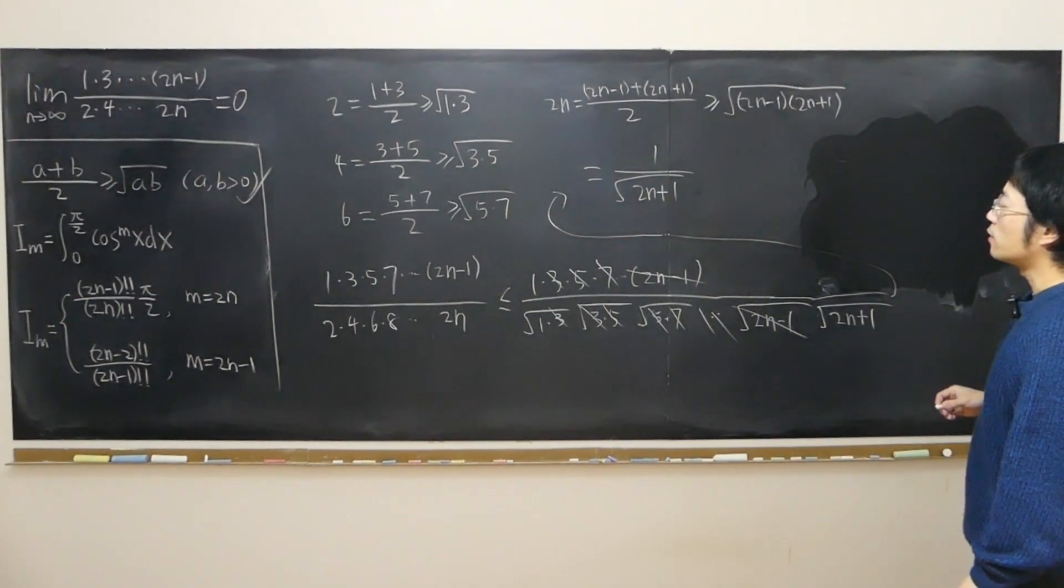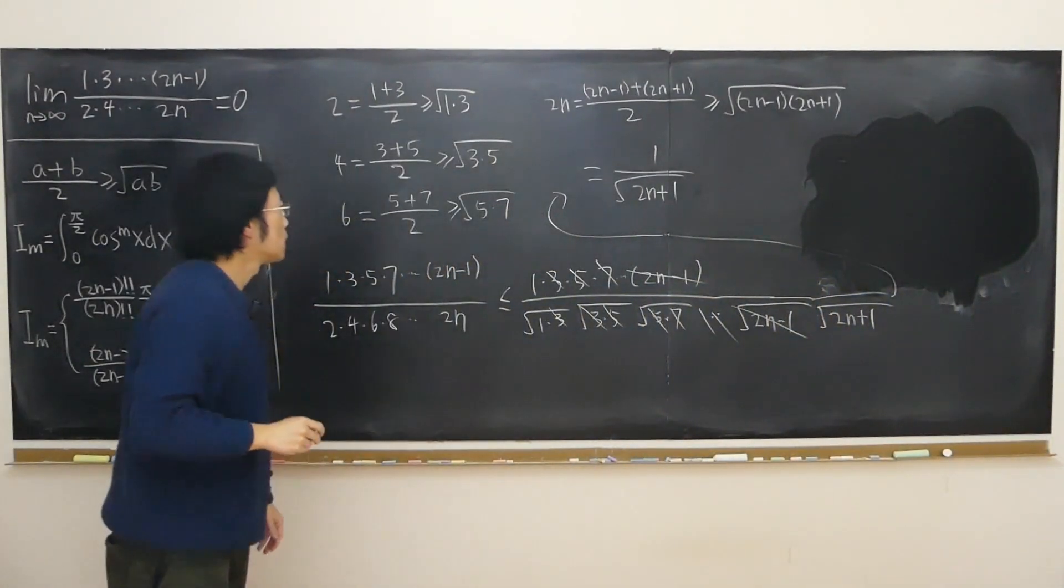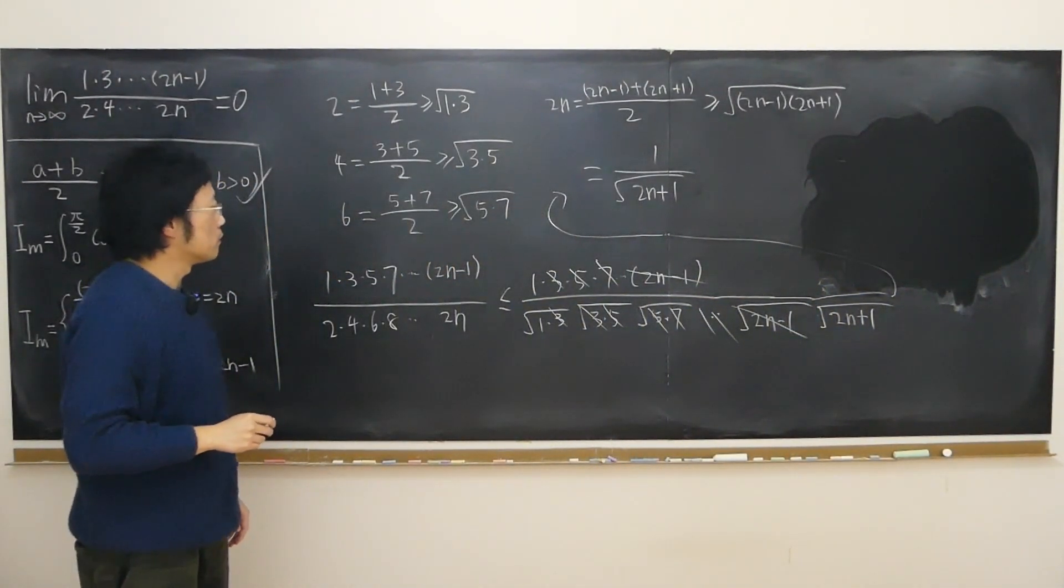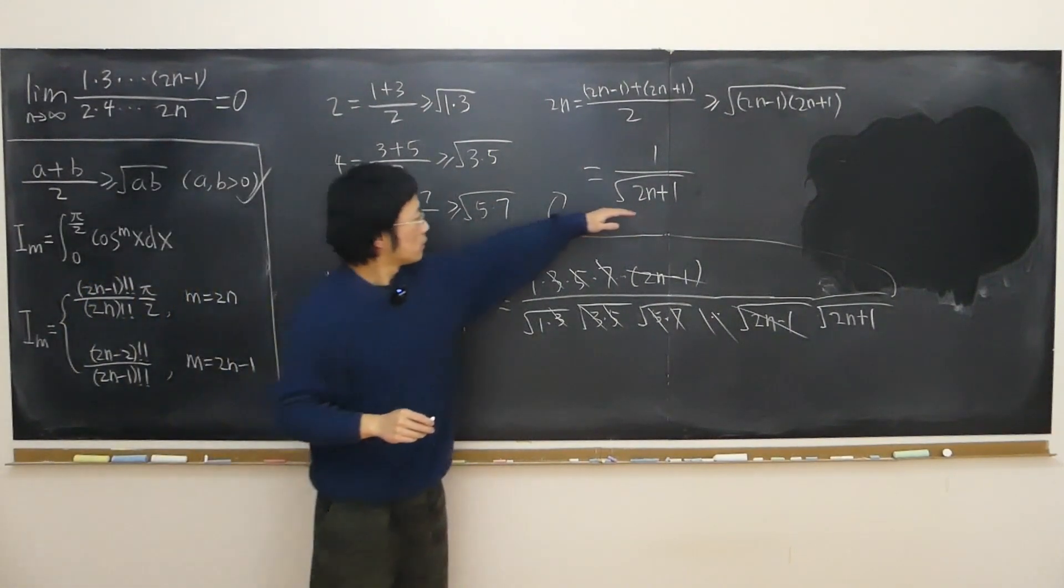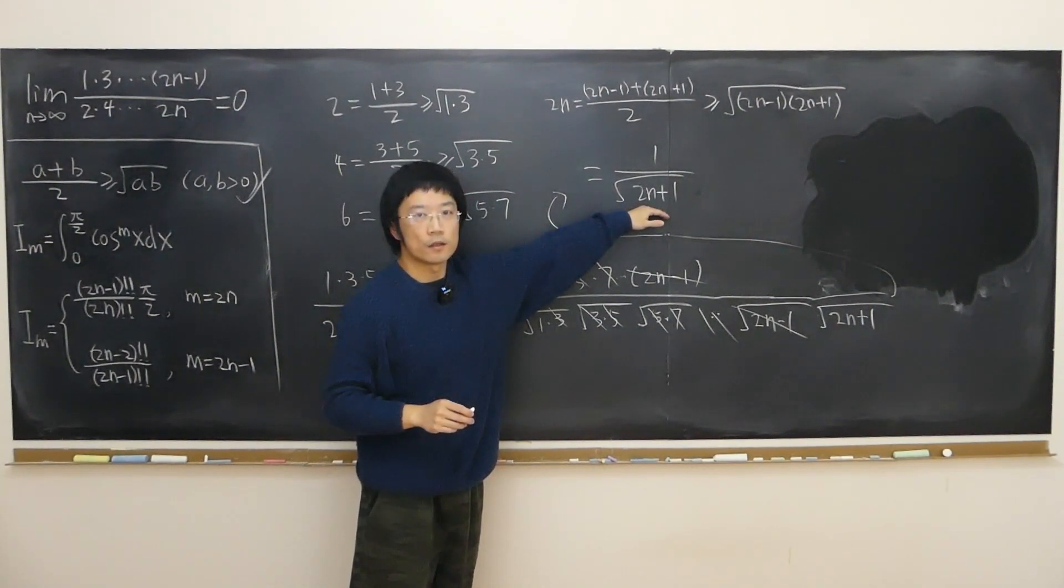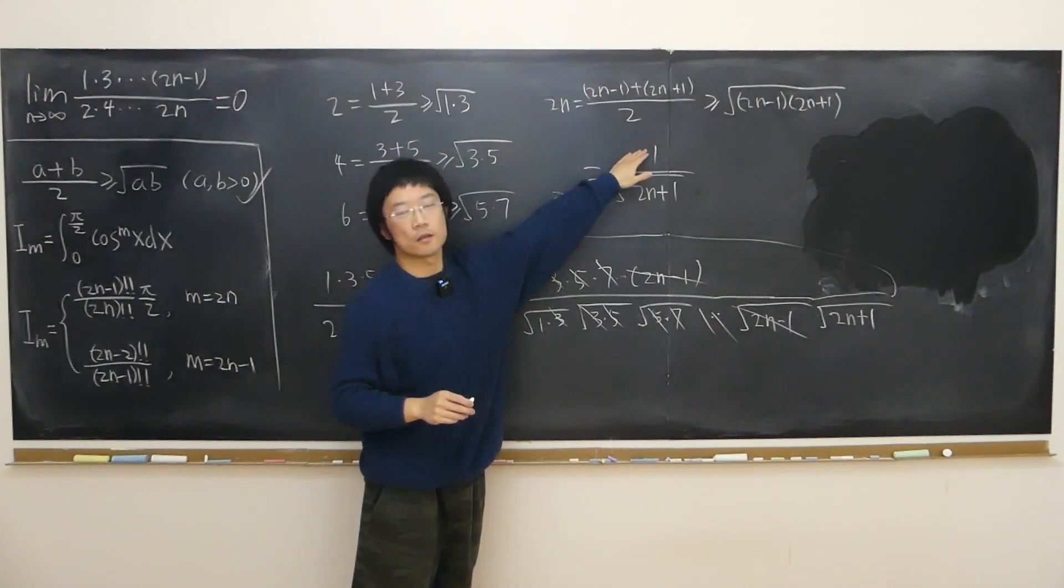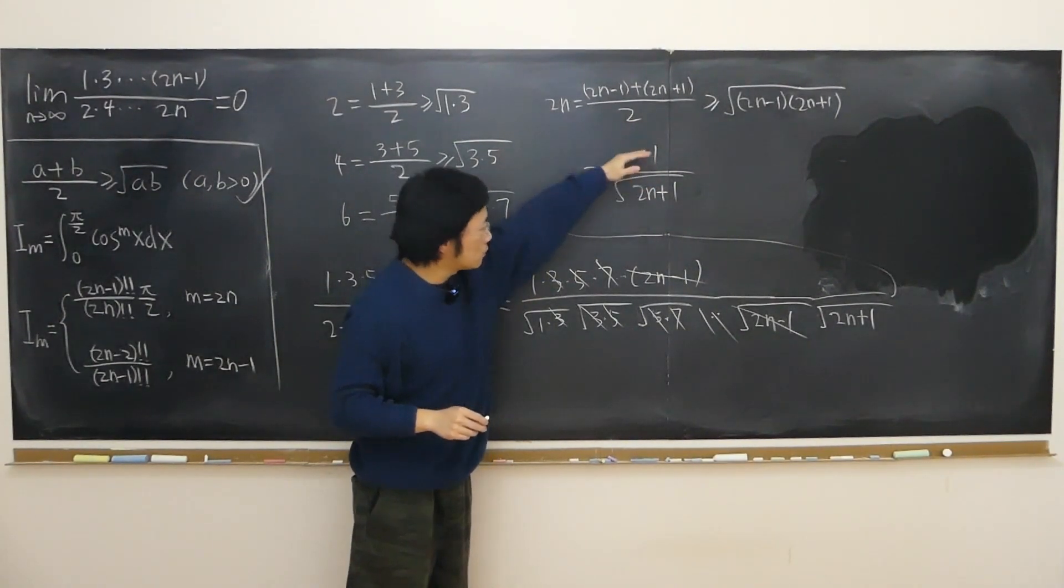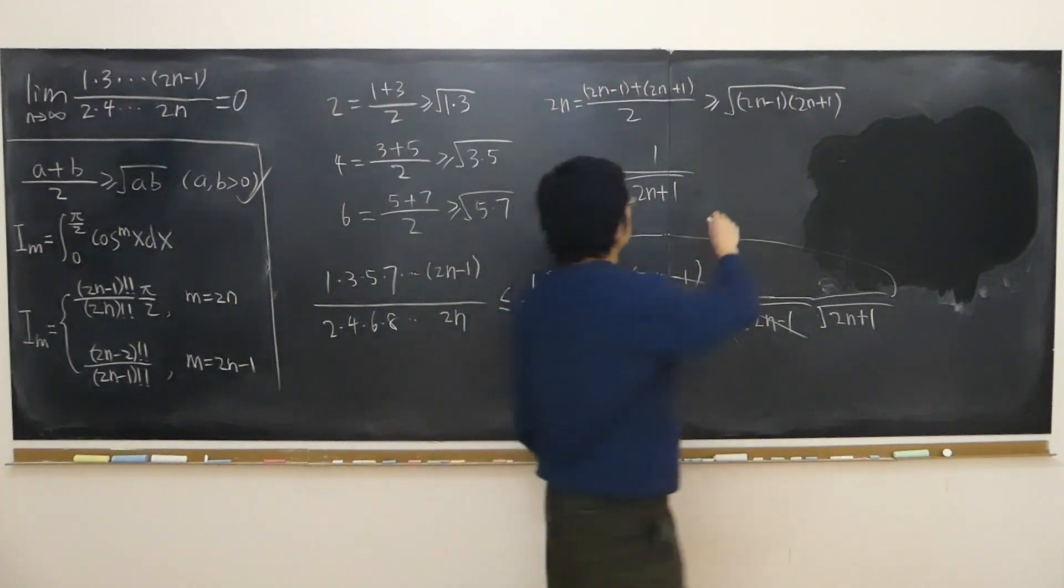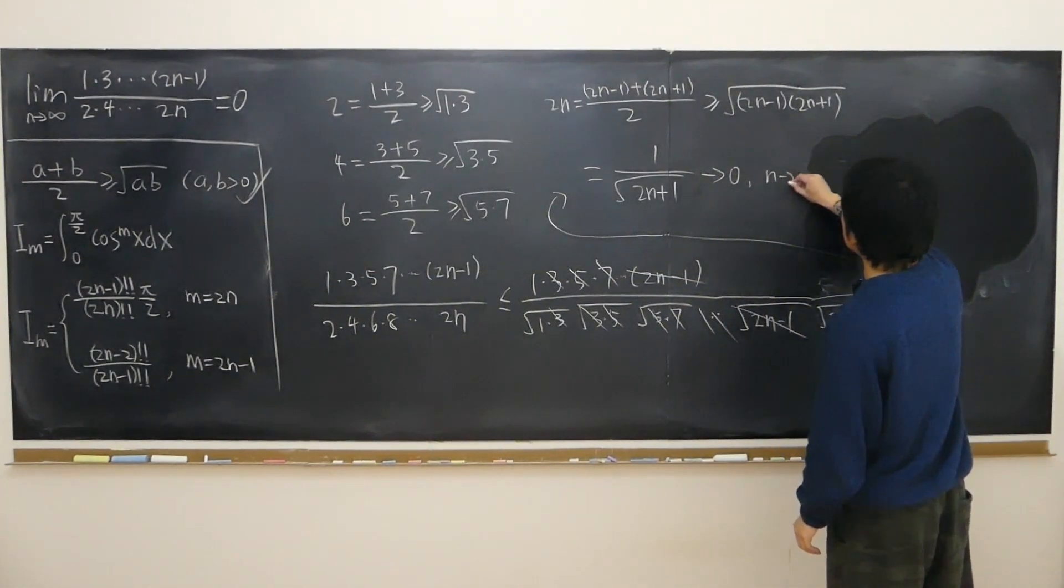Okay, so after losing the inequality I can see that it is in fact a limit of zero as n approaches infinity. Because obviously we have n at the bottom and just a constant at the top.